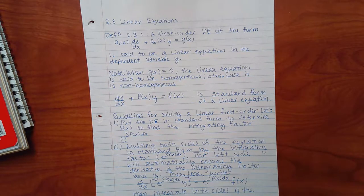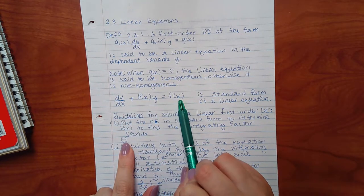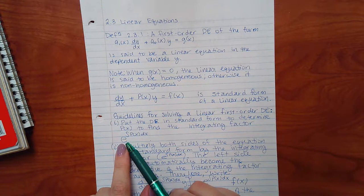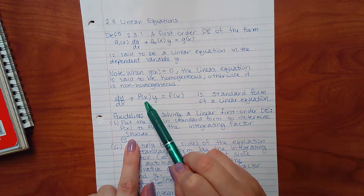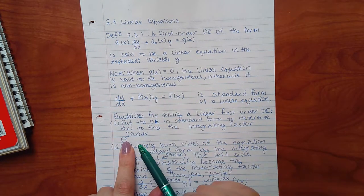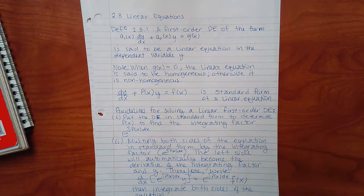Someone somewhere figured out that you can solve this DE if you multiply every single term by this integrating factor: e raised to the integral of P(x) dx — where e is the number 2.718... They figured out that if you multiply each term by this, you can then solve the DE. I'm sure they probably had to solve thousands and thousands of these things to notice that pattern.